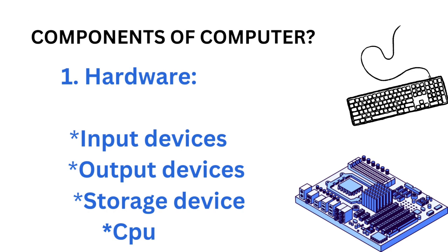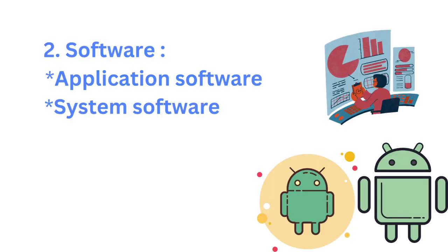Components of computers: 1. Hardware — Input Devices, Output Devices, Storage Devices, CPU. 2. Software — Application Software, System Software.